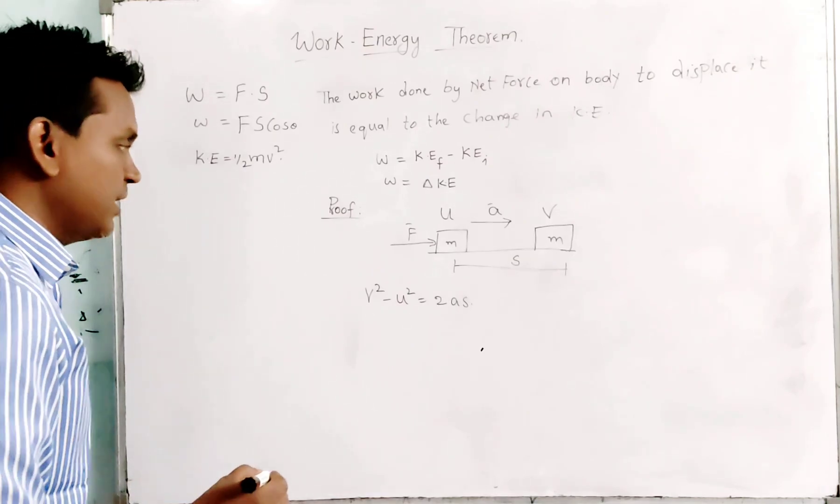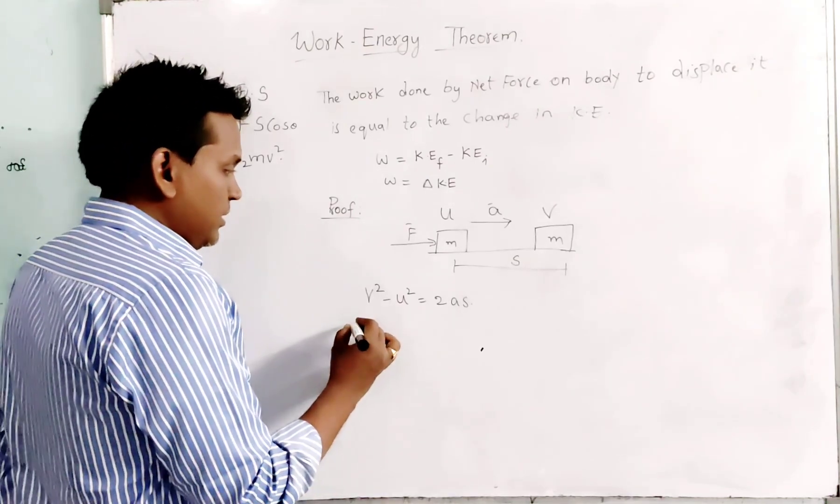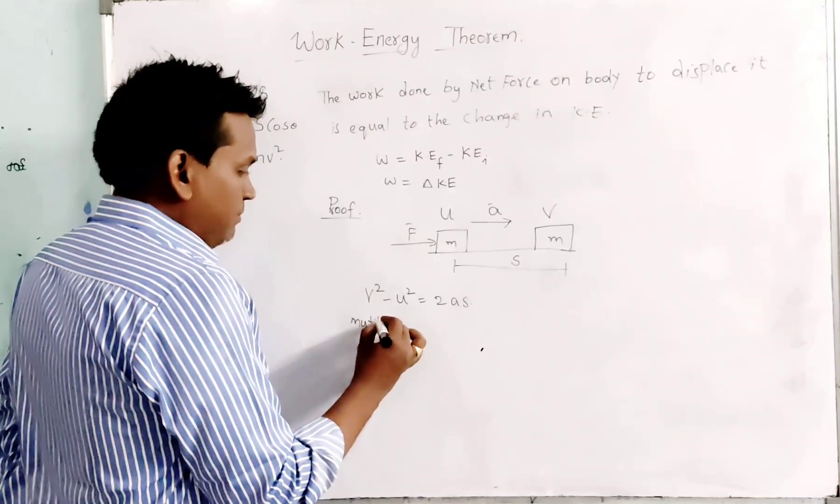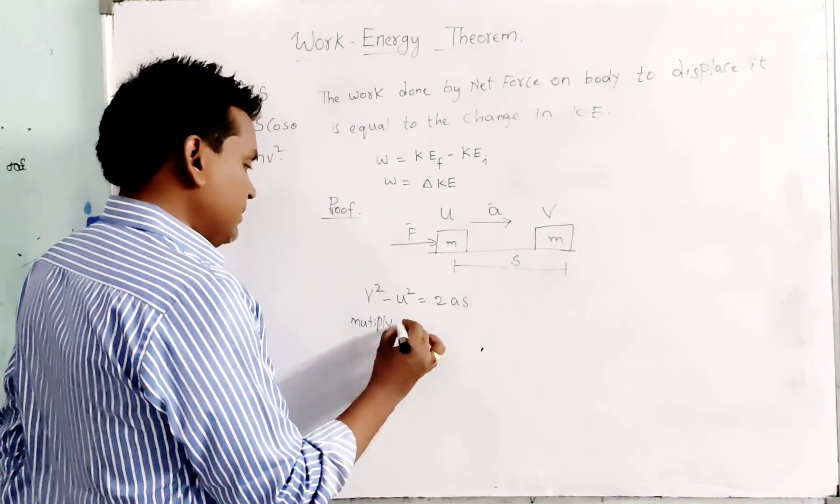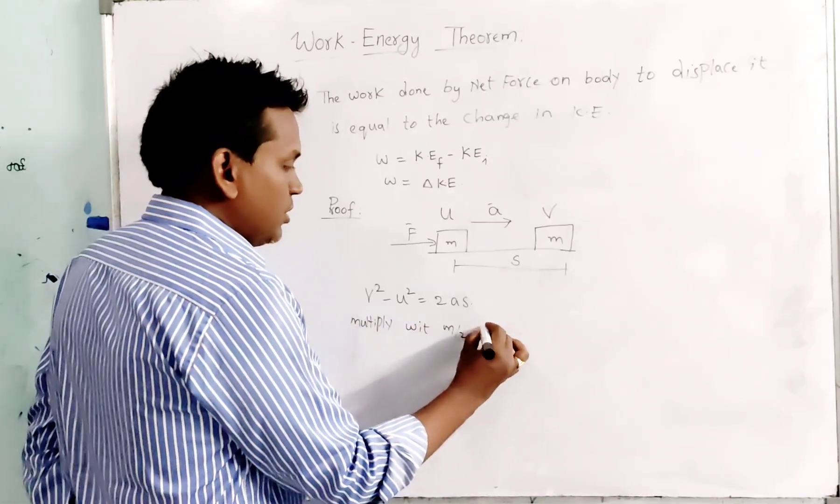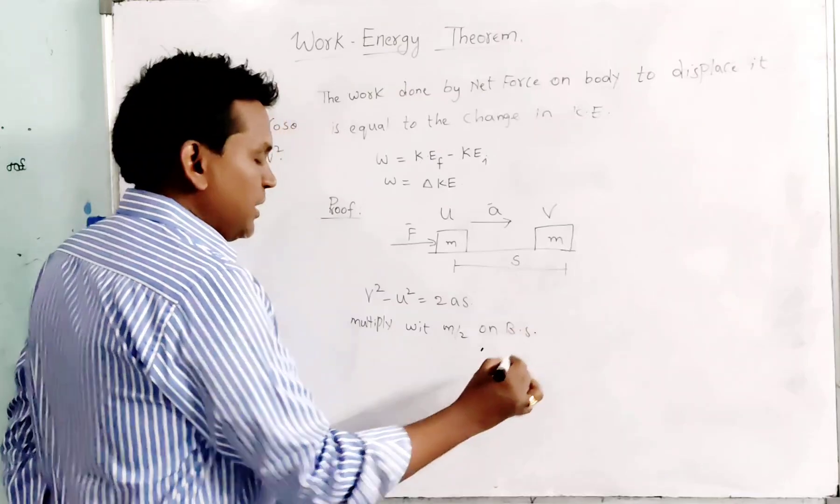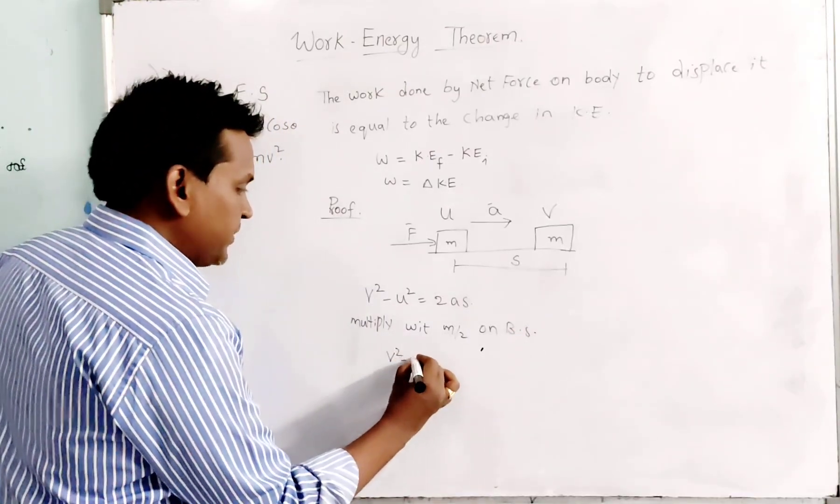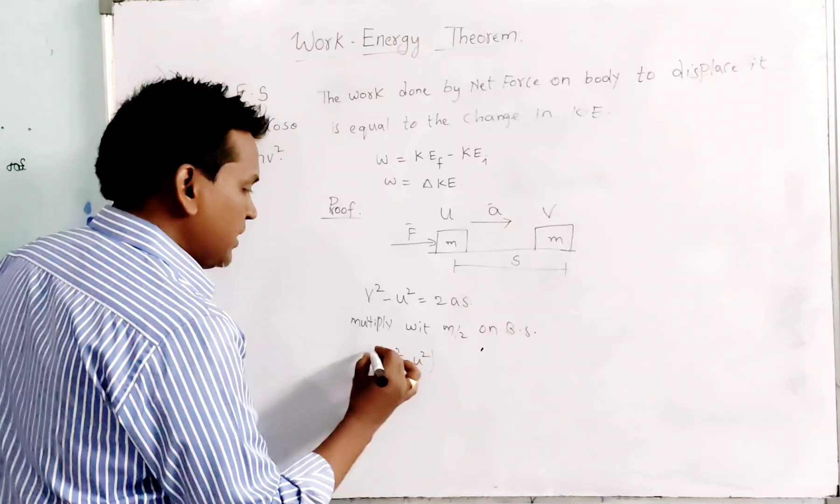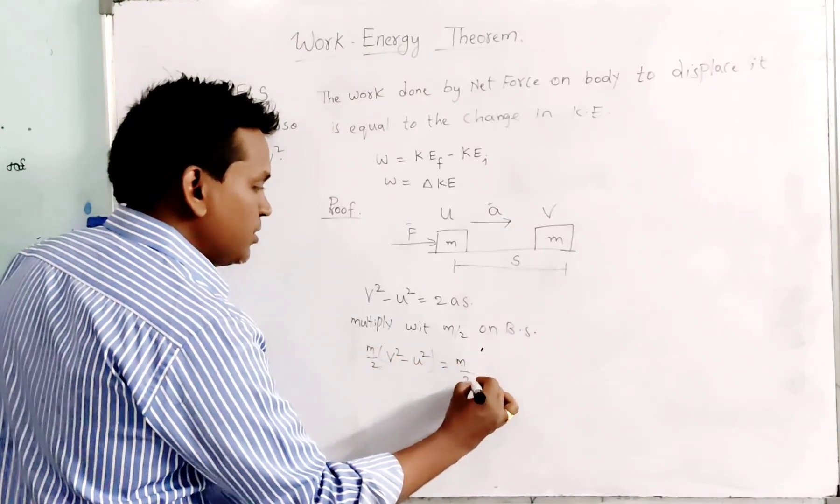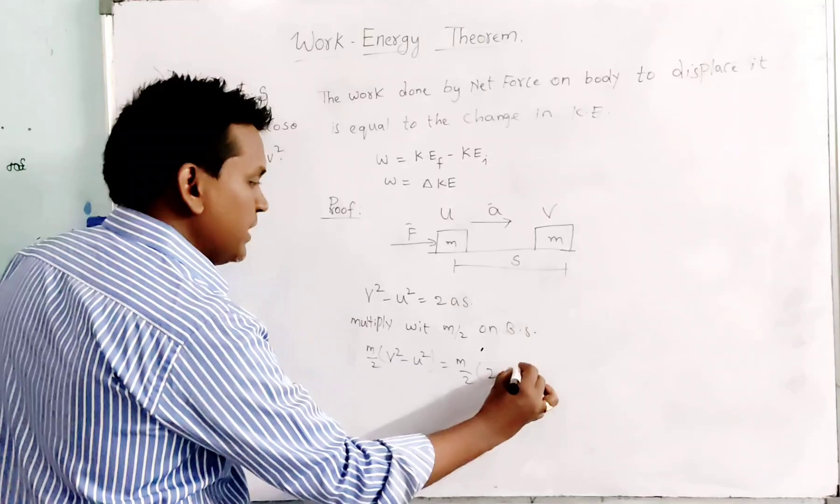For this equation, we are multiplying with M by 2 on both sides. So by multiplying M by 2 on both sides, we will have V square minus U square into M by 2, and that equals M by 2 into 2AS.